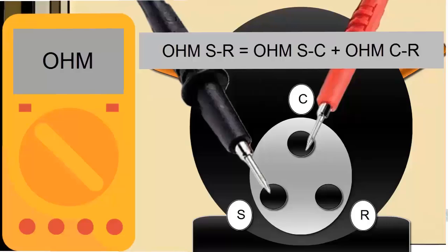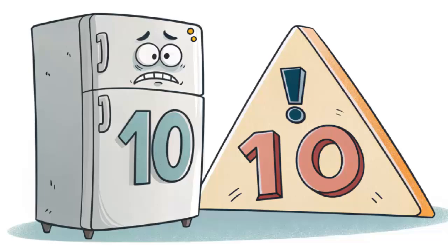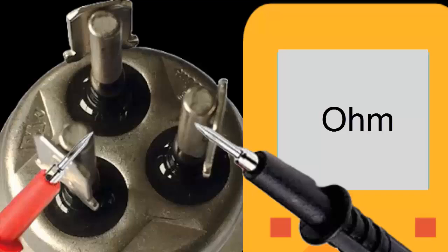6. For inverter compressors, the resistance between each pair of pins must be identical. Use a multimeter set to ohms to perform this test.